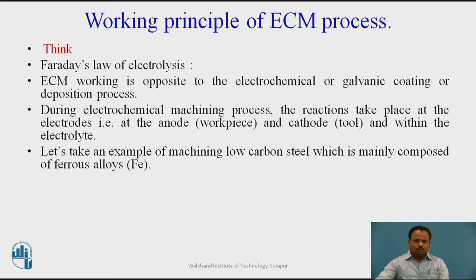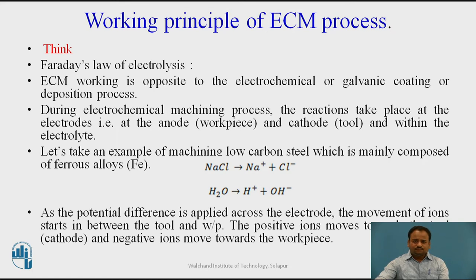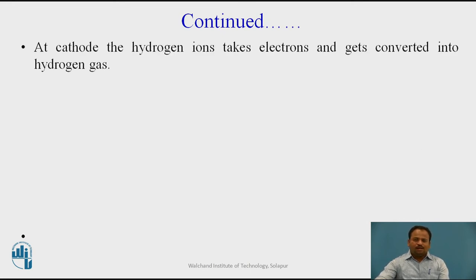Let us take an example of machining low carbon steel, which is mainly composed of a ferrous alloy, using electrolyte NaCl (sodium chloride). When current is passed, sodium chloride ionizes into Na⁺ and Cl⁻, and water ionizes into H⁺ and OH⁻. As the potential difference is applied across the electrodes, ion movement starts between the tool and the work piece. Positive ions move towards the cathode and negative ions move towards the anode. At the cathode, hydrogen ions take electrons and are converted into hydrogen gas.